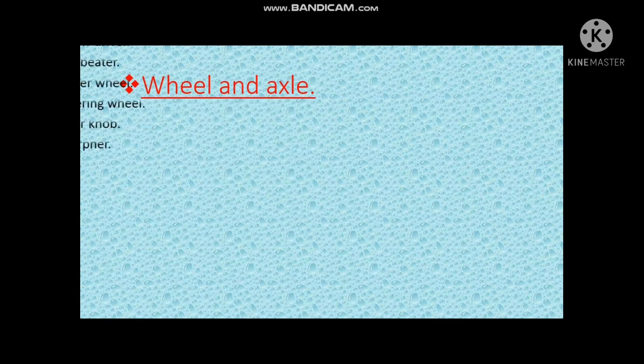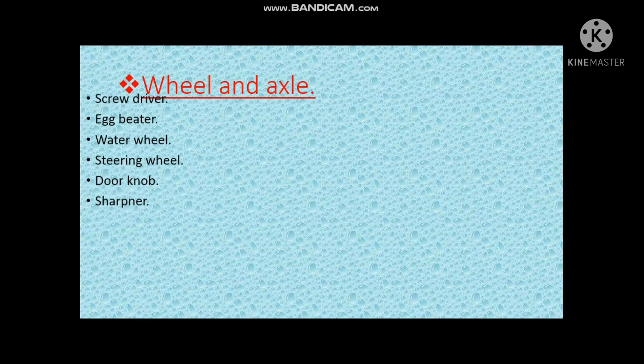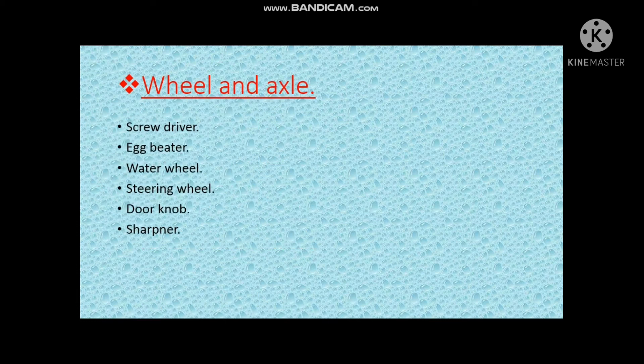Wheel and Axle: Screwdriver, eggbeater, waterwheel, steering wheel, door knob, and sharpener are examples of wheel and axle.